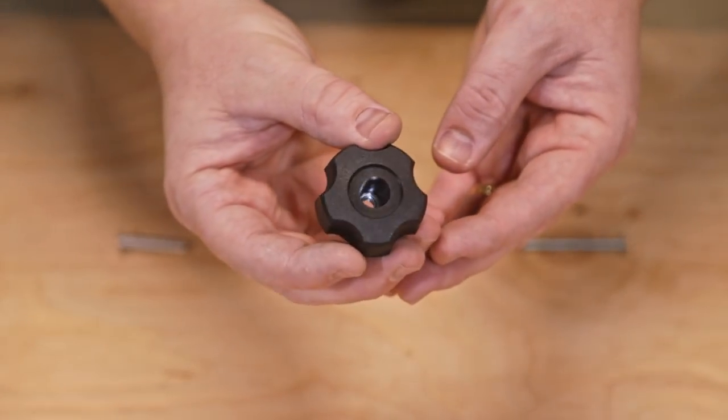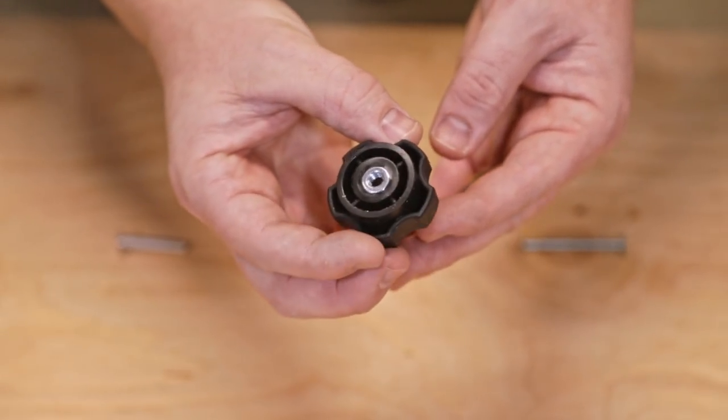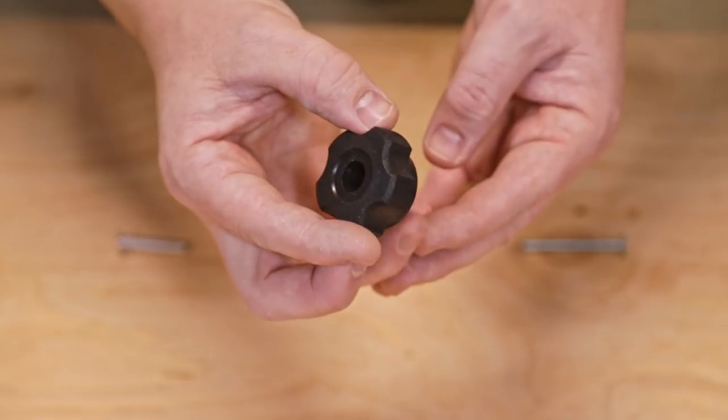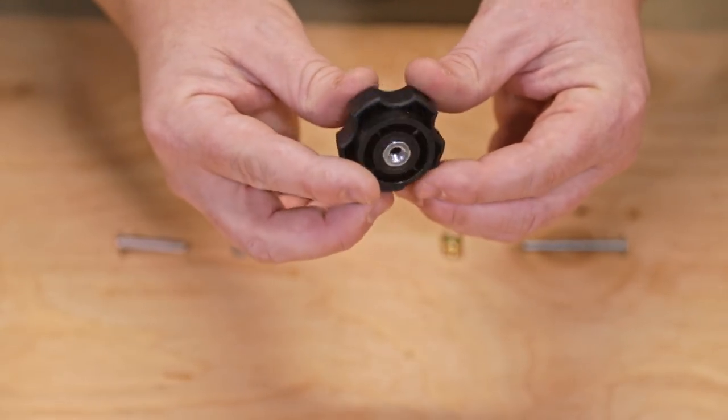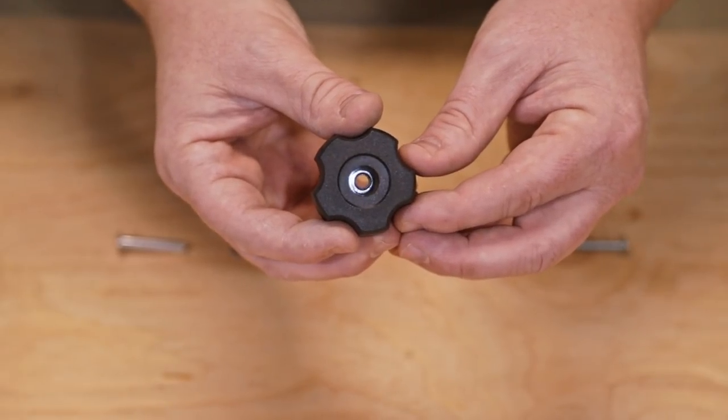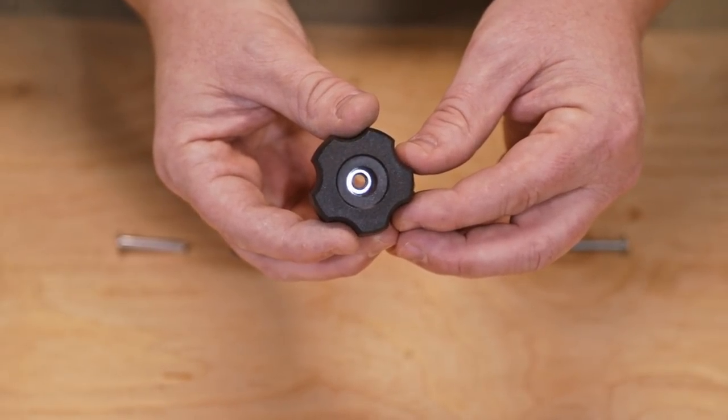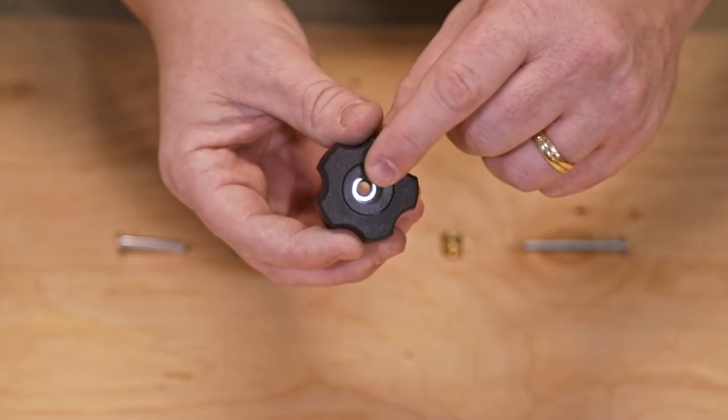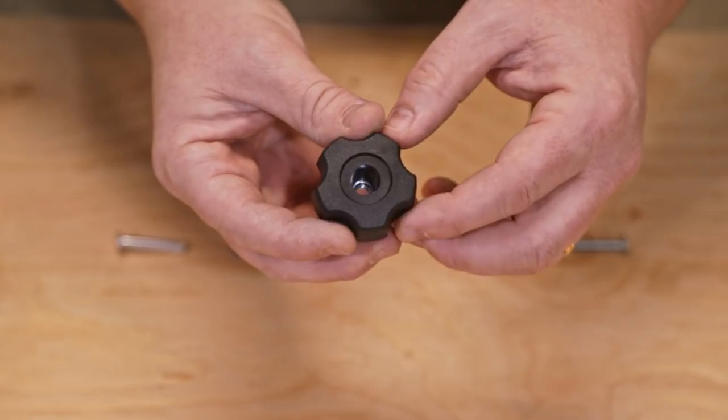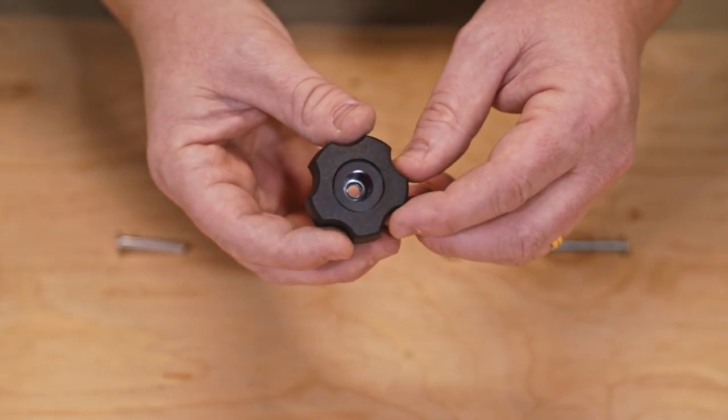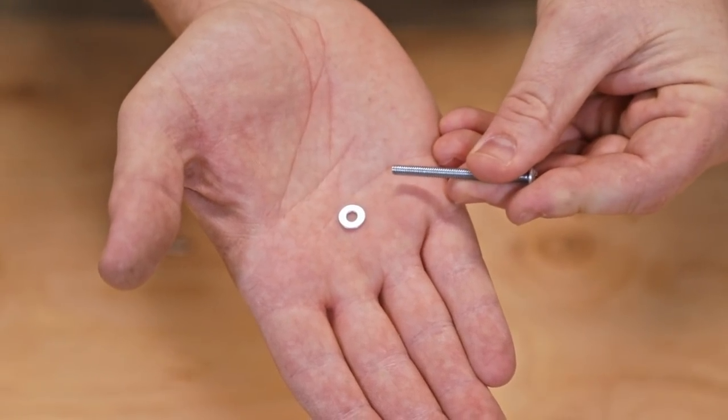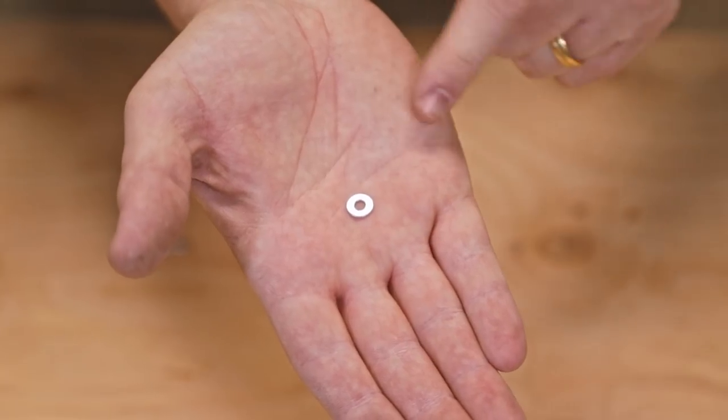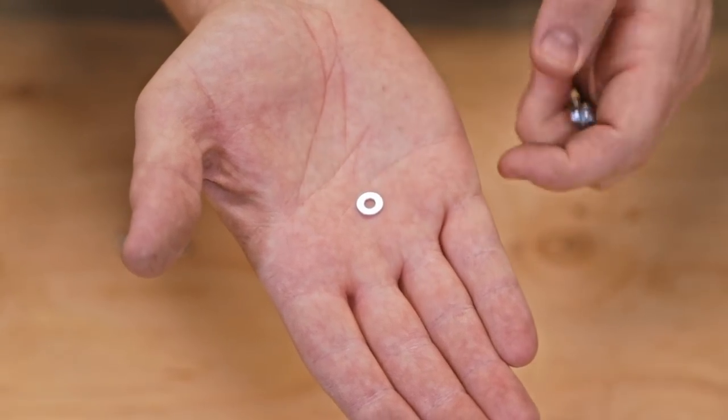Next, I found this little knurled knob at the local hardware store. I think I picked this up at Lowe's, though I'm sure Home Depot probably has them as well. The only thing you need to make sure of when you buy this is that it's going to match whatever screw you're using. So I'm doing this with an 832 sized screw, so make sure you get an 832 knurled knob. I think this came in a package of two for $1.60.